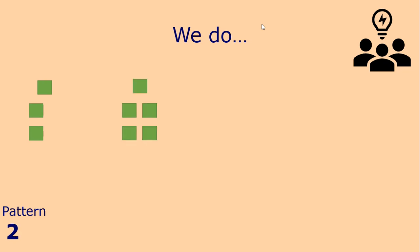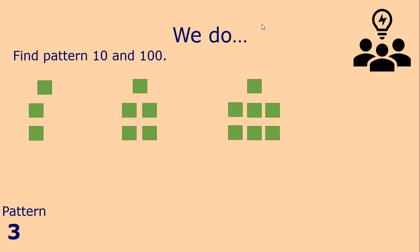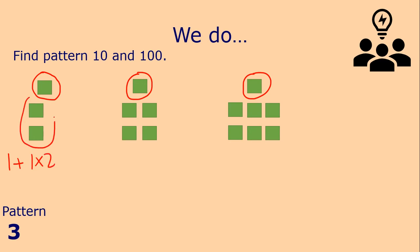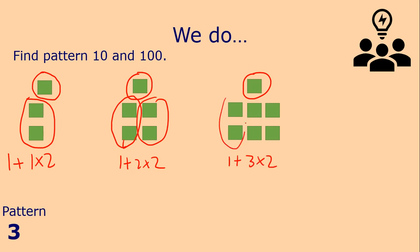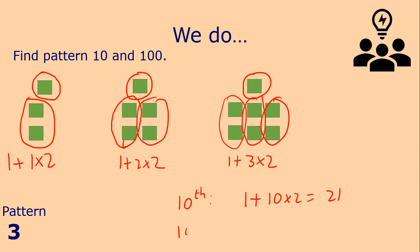Here's another pattern, and again we've been asked to find pattern ten and a hundred. We could just count the number of blocks, but let's think about what's happening. We always have one odd block at the top. Pattern one has one odd block and then one row of two. Pattern two has one odd block and two lots of two. Pattern three has one odd block and three blocks of two. So for the tenth pattern, we would have one odd block at the top and ten blocks of two. For the hundredth pattern, one odd block plus a hundred lots of two.